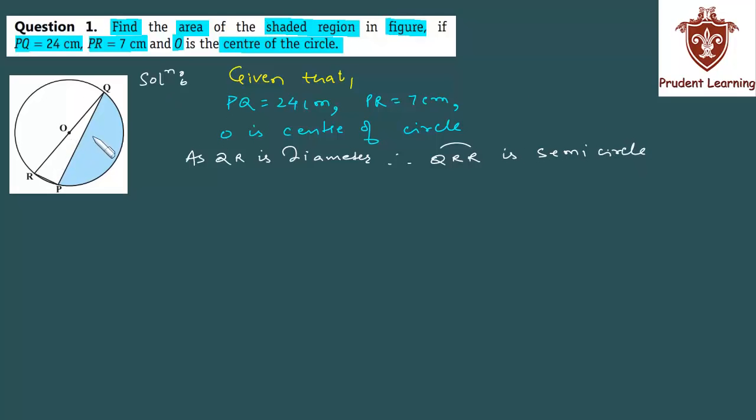And because of this, this angle, angle QPR, will be 90 degrees. Because you know that any angle in a semicircle is 90 degrees. You have studied this theorem in lower classes. We know that the angle in a semicircle is 90 degrees. Let's write this. Therefore, we have angle QPR as 90 degrees, since the angle in a semicircle is 90 degrees.